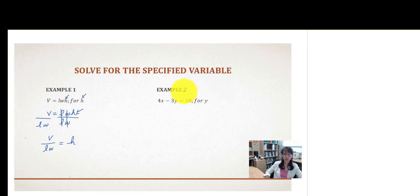In order to rearrange these formulas or literal equations, we're simply applying the properties of equality. In example 2, you might recognize 4x minus 3y equals 10 as the equation of a straight line. We want to solve for y. When we do that, we're actually transforming this standard form equation into the slope-intercept form of the line.